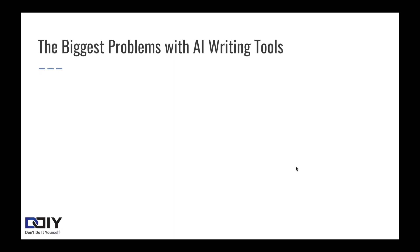Now, many people are afraid to use AI tools, and with good reason. Here are the biggest problems with AI writing tools. And don't worry, we have a solution for each of these, but it is important to understand the limitations up front. First off, the majority of tools work best for short form content. They only let you generate a paragraph at a time, unless you want to sacrifice quality. Most won't cut it for long form blog posts and work better for things like product descriptions or social media ads, although we have found a great tool for long form content, which we will show you later.